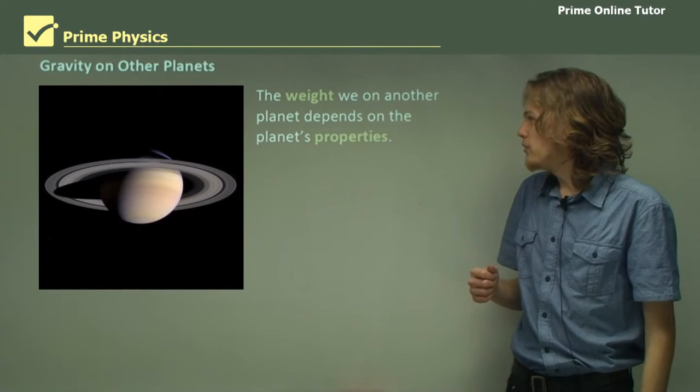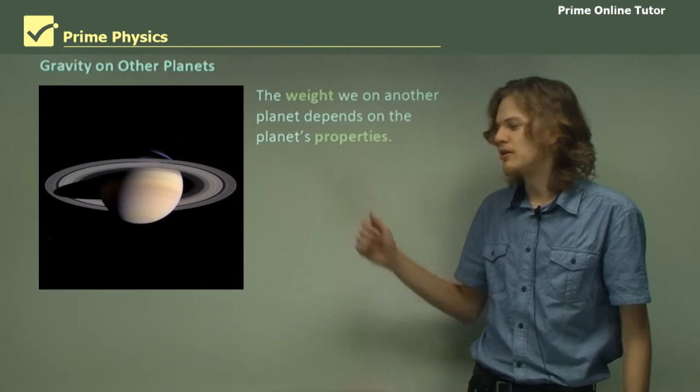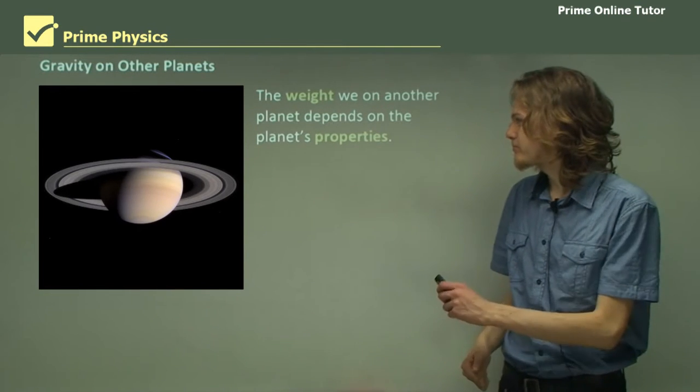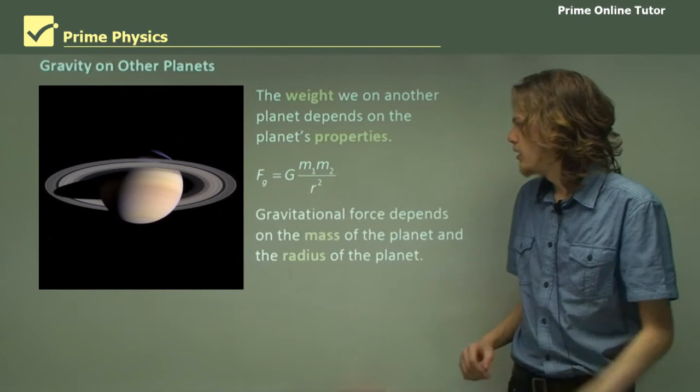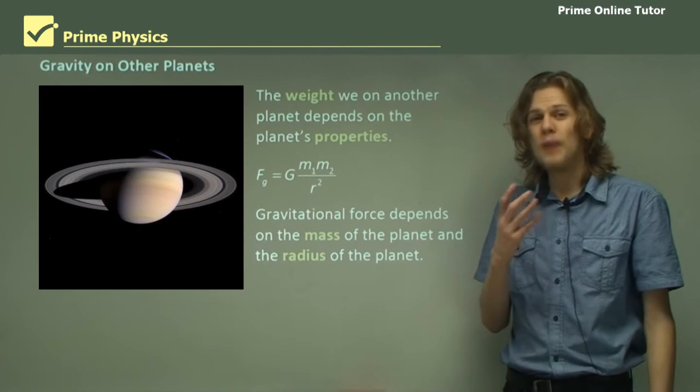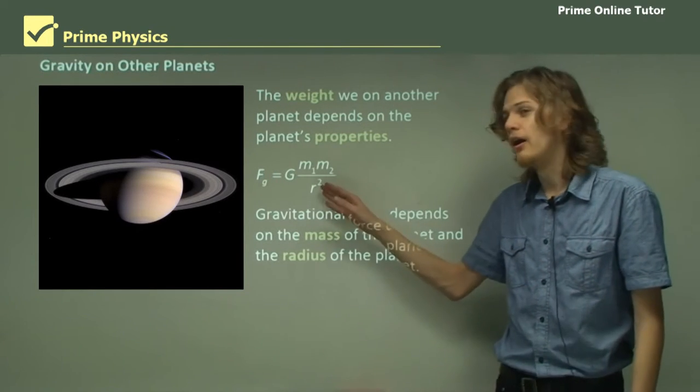So the weight on another planet depends on the planet's properties. We have a different planet over here Saturn of course. Fg equals gmm over r squared as we know. So gravitational force depends on the mass of the planet m2 and the radius of the planet r.